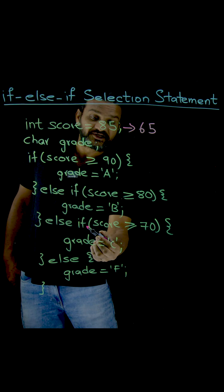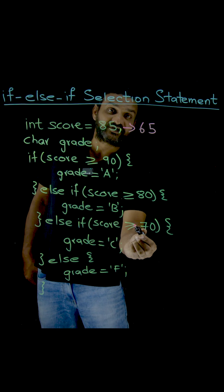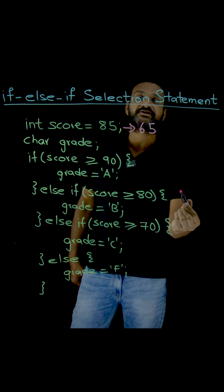So the third option is score greater than or equal to 70. 65. Is 65 greater than or equal to 70? No, it is not true.